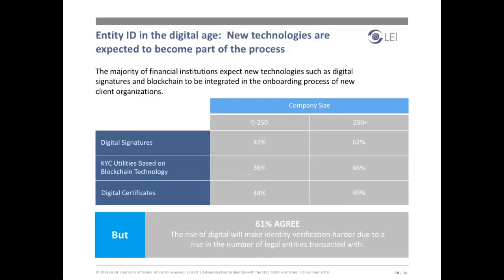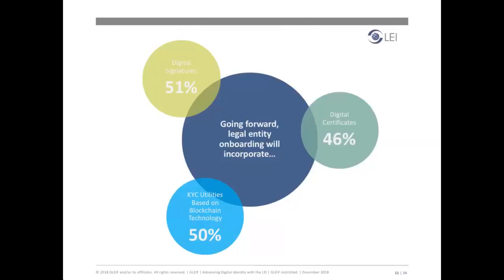Businesses need an entity identification system that keeps them on the right side of both regulators and clients, while making them more efficient overall. The majority of financial institutions expect new technologies to be integrated in the onboarding process, including digital signatures, KYC utilities based on blockchain technology, and digital certificates. However, 61% of our respondents believe that the growth of digital solutions will actually make identity verification more difficult, simply because it will mean a rise in the number of legal entities transacted with. Rather than holding back on digital improvements, we must find a way of identifying entities that reduces the complexities brought about by digital and makes the job easier for everyone.